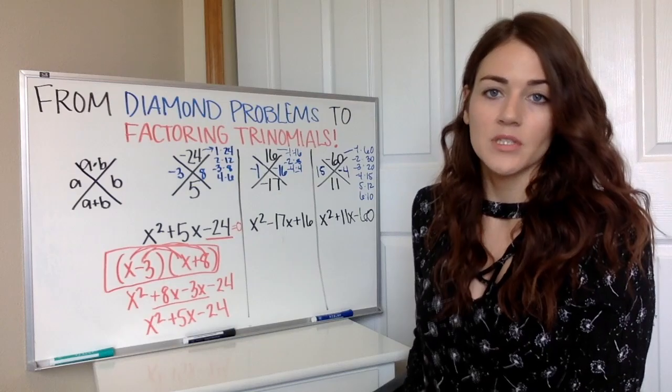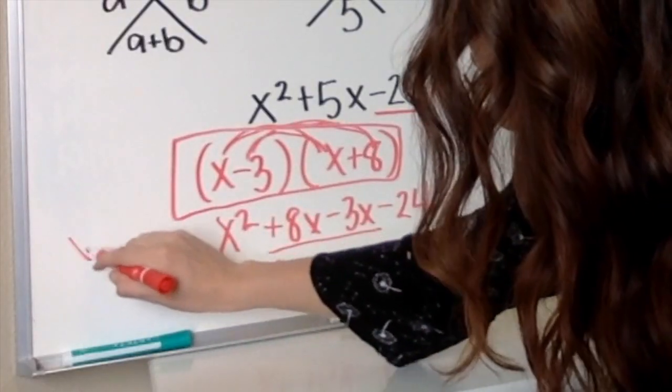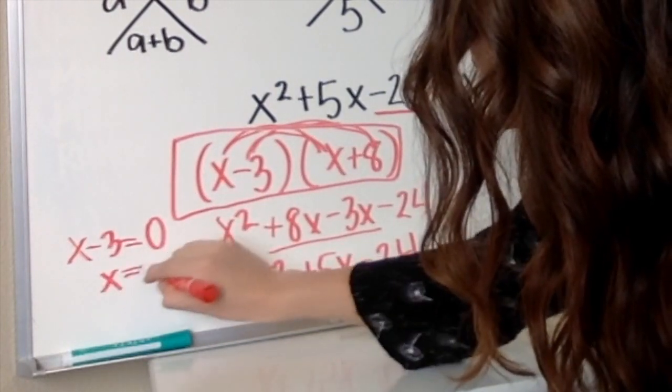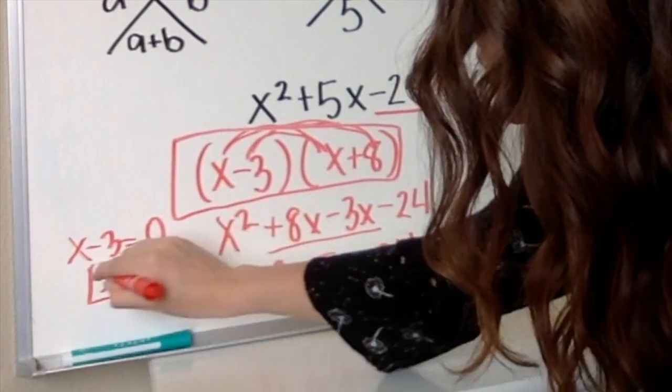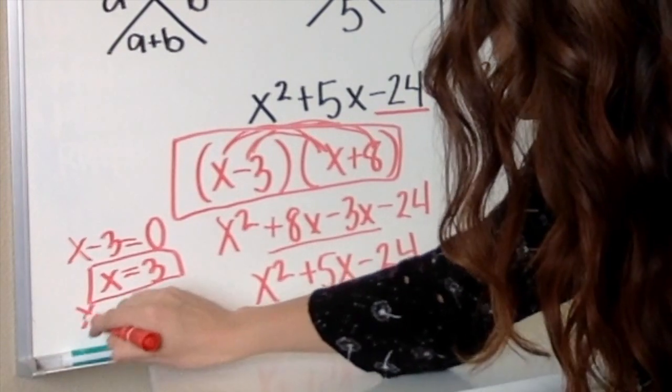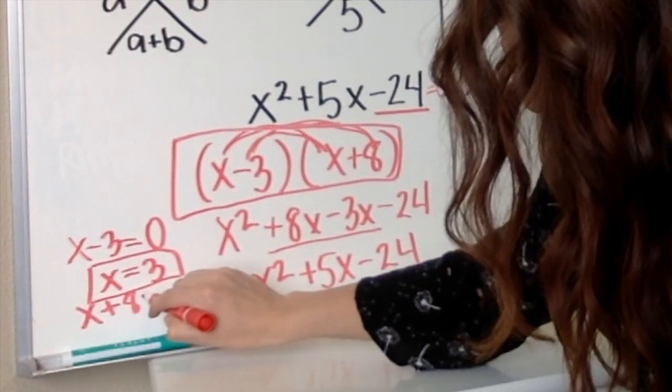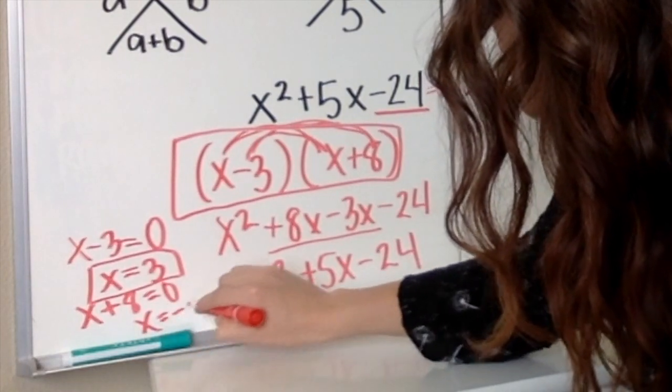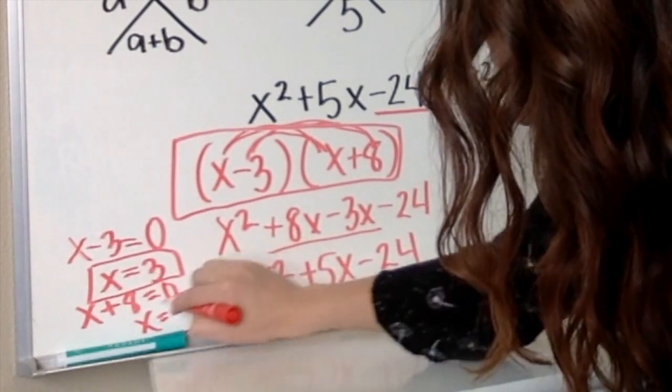Add 3 to both sides. x equals 3 is one answer. And then x plus 8 equals 0. If we were to subtract 8, we would get x equals negative 8 as my second answer.